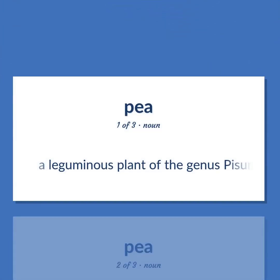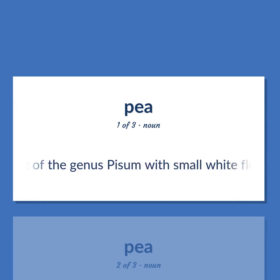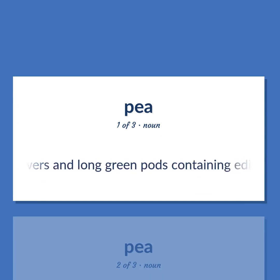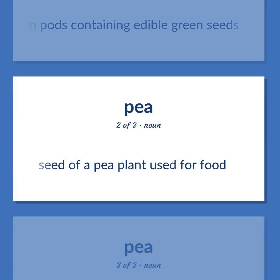The leguminous plant of the genus Pisum with small white flowers and long green pods containing edible green seeds. Seed of a pea plant used for food.